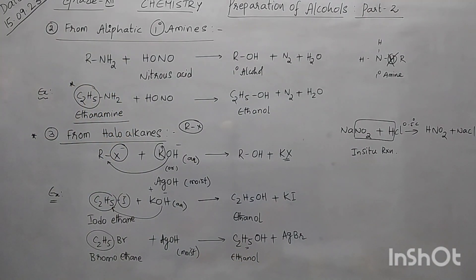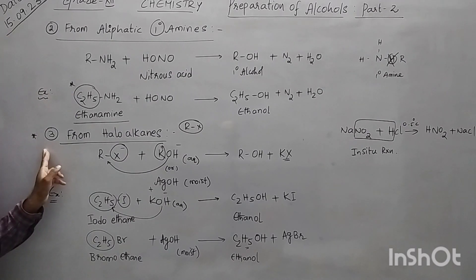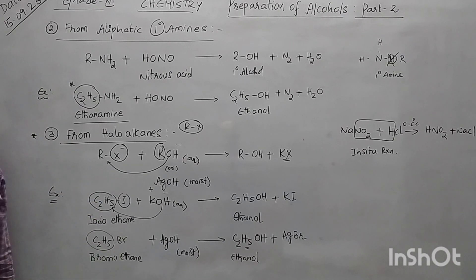So we have completed the three methods: first one was from Grignard reagent, second one is from aliphatic primary amine, and third one is from haloalkanes. Now let's complete the remaining two methods.